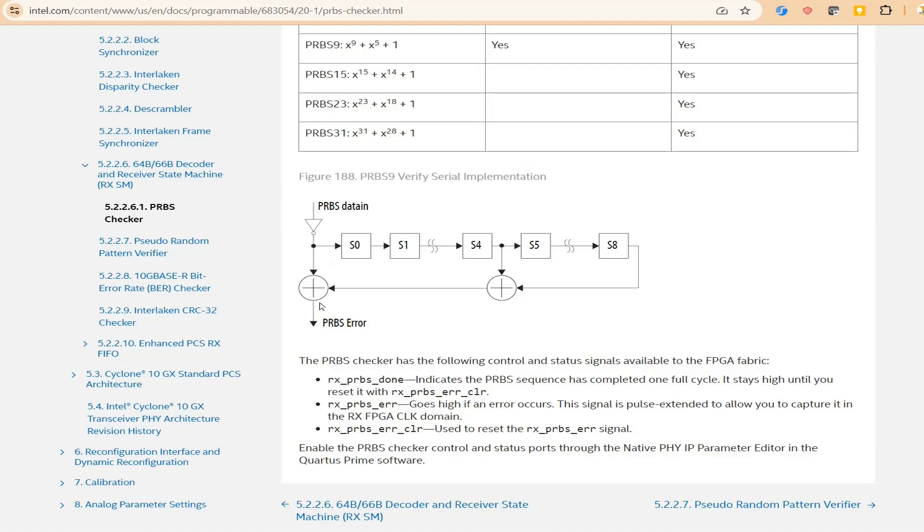So if both the bits match with each other, which is ideal case, the output will be always zero. But as soon as we get erroneous bit at the input sequence, PRBS data in, we will see the error bits in the output.